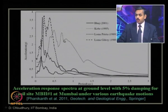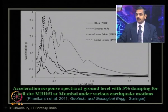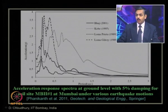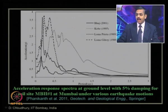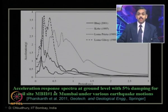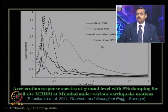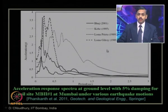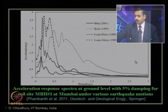For Kobe motion, tall buildings are more vulnerable because the dominant time period is relatively higher compared to Bhuj motion, where the time period is lower. This varies both site to site and with respect to the input earthquake motion being analyzed — which is also very important.